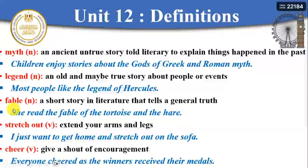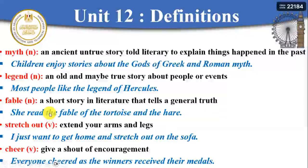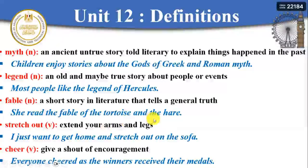What about the word 'fable'? A fable is a short story in literature that tells you a general truth about life, creatures, plants, and so on. It is a short story written for children or teenagers to tell them about a truth in life. For example: 'She reads the fable of the tortoise and the hare' — this is a story she likes.